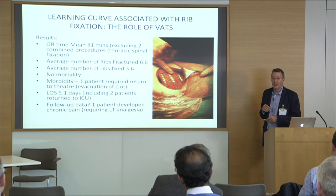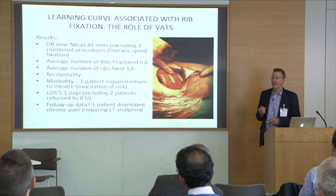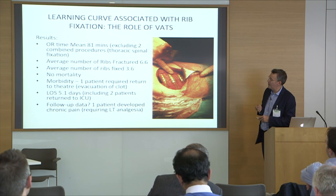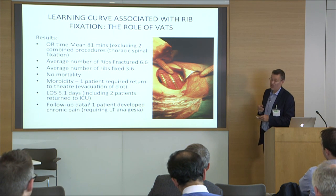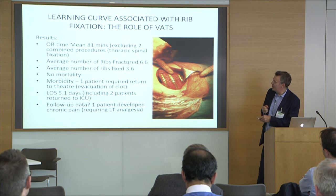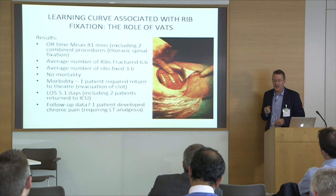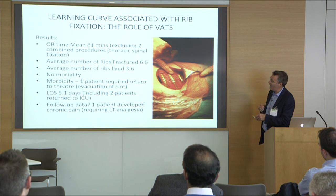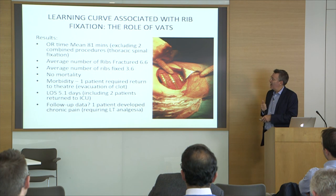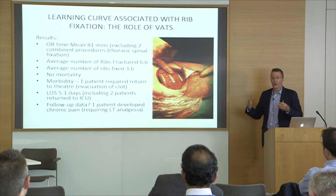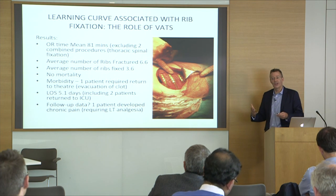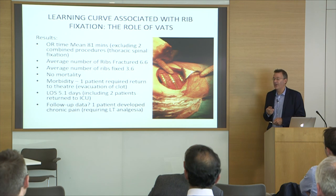In terms of OR time, these cases do take a chunk out of your day, which is important when running an elective service. Increasingly we're combining these procedures with neurosurgeons and orthopaedic surgeons. We typically find around six to seven ribs fractured in patients we're offering surgery to, and we're fixing on average three to four ribs. By the time you've fixed the third or fourth rib, the others start to become aligned, so you often don't need to fix all of them.